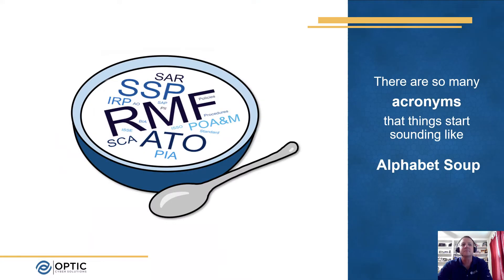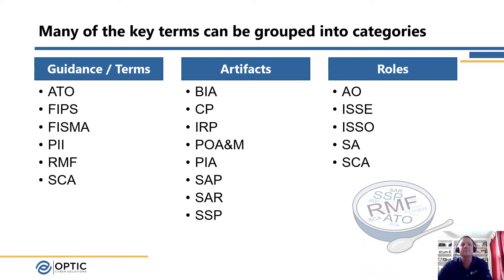This webinar is specifically focused on the acronyms used in the process. For those of you with a little familiarity with the Risk Management Framework, you understand there are a lot of different acronyms — very much like an alphabet soup. We want to help organize and define what the acronyms mean. To do that, we categorized the acronyms into three primary buckets: guidance and terms, artifacts or documents and diagrams, and the roles or people involved throughout the process.